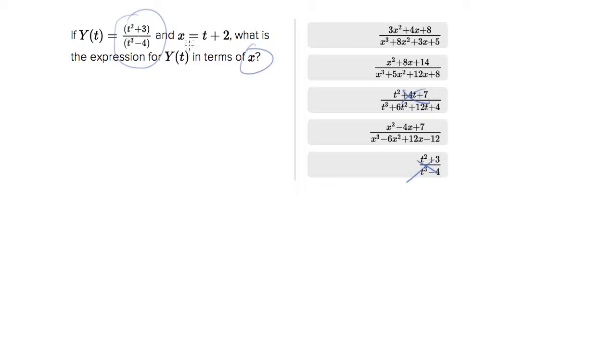Now at this point, how do we convert t's into x's? Well, we are given an equation that relates t and x. We have to solve it for t of course. So if x is t plus 2, you can say t equals x minus 2. So everywhere that we have a t, we can substitute x minus 2.